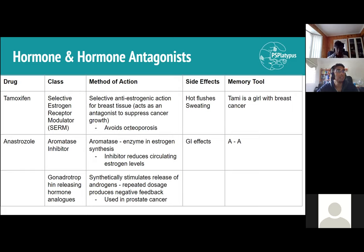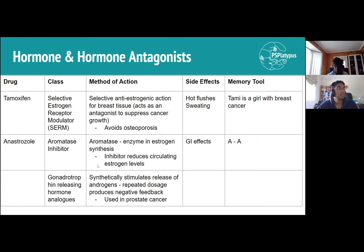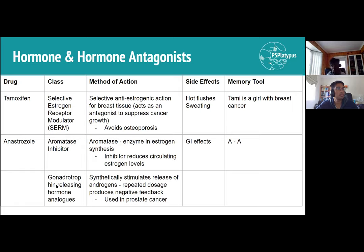Aromatase inhibitors block aromatase, the enzyme used in estrogen synthesis, reducing circulating estrogen levels. Side effects include GI effects. The example is anastrozole. Gonadotropin-releasing hormone (GnRH) analogs synthetically stimulate androgen release; with repeated dosing, this causes negative feedback that ultimately reduces androgens, used in prostate cancer. Anti-androgens can also directly reduce total androgen levels. Glucocorticoids at high doses are used in blood-borne cancers like lymphoma and leukemia, causing lysis of affected cells.